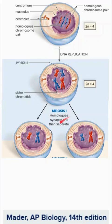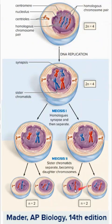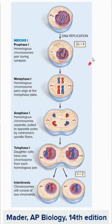In meiosis, there are two sets of division. During meiosis I, we separate the homologs — the homologous chromosomes. In meiosis II, we separate the sister chromatids. What we end up with are haploid daughter cells — they are no longer diploid and don't have homologous chromosomes. Meiosis still has prophase, metaphase, anaphase, and telophase.